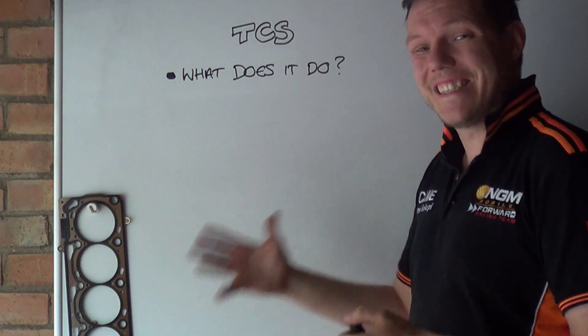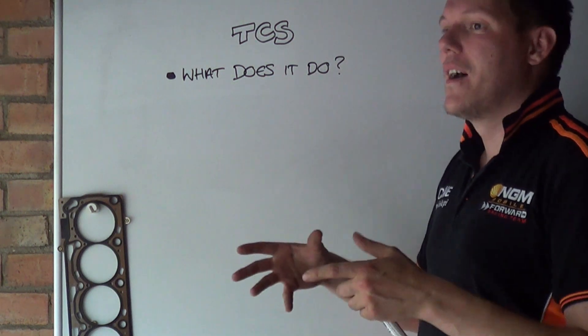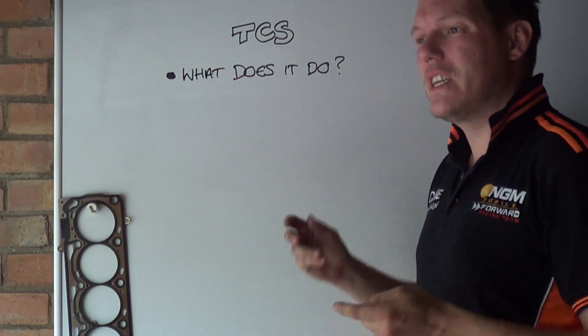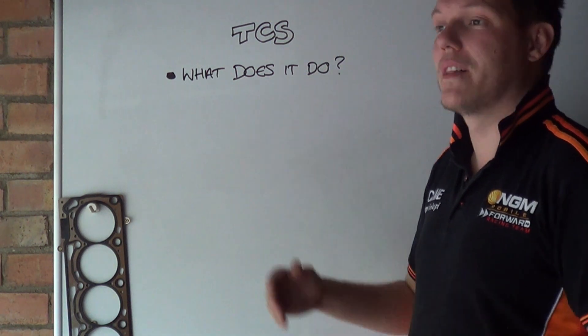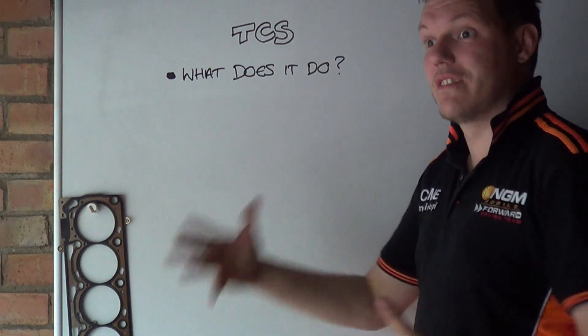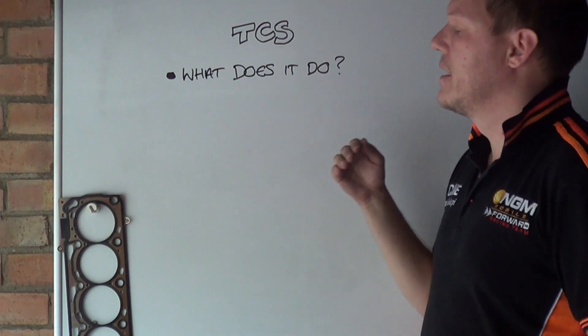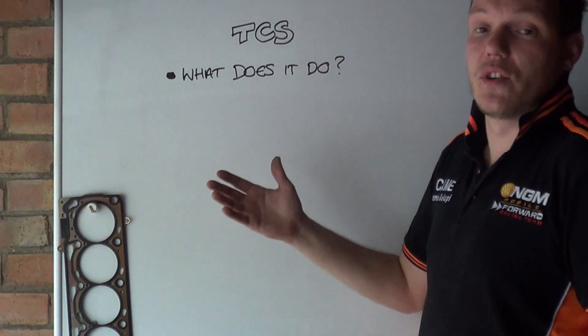The traction control can sense this, that's the first part. And then when it senses this, the ECU can manipulate the engine to lower the torque that's being sent to the rear wheel to give the tire a chance to regain grip and then everything's hunky dory.